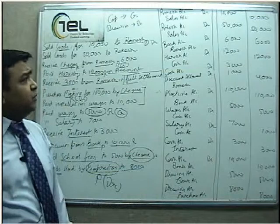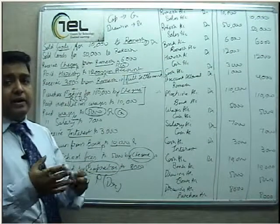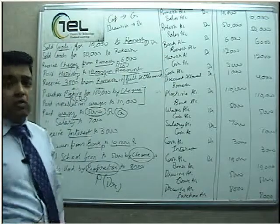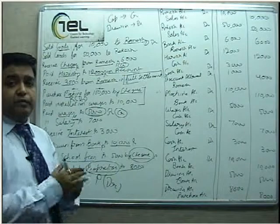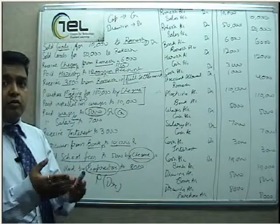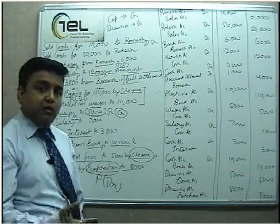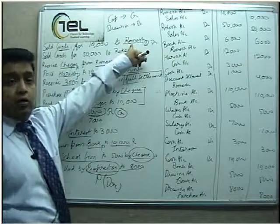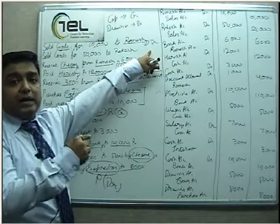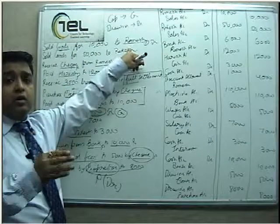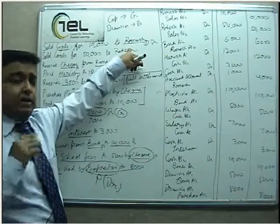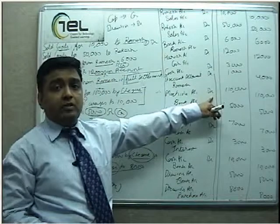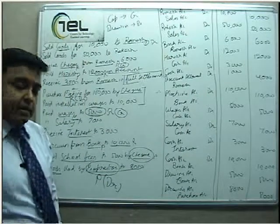To summarize today's lecture on the first book called Journal: there are three types of accounts, each with its separate rule. Personal Account: Debit the Receiver, Credit the Giver. Real Account: Debit what comes in, Credit what goes out. Nominal Account: Debit all Expenses and Losses, Credit all Incomes and Gains. The three steps for recording in the Journal are: first, identify the accounts involved in the transaction; second, apply the rule relating to each account type (in a single transaction, two different rules can be applied); and third, record the entry with the Debit item first, followed by the Credit item, writing 'Dr' to denote the debit side.